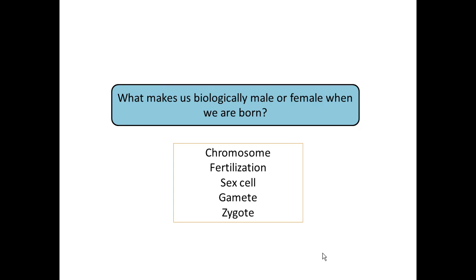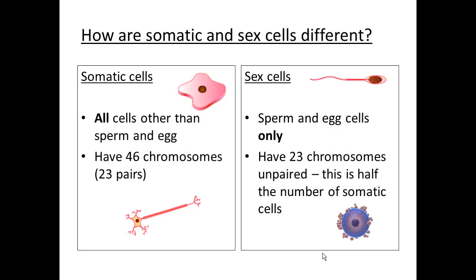Let's start this lesson with a quick recap of what we said last time. In our body we have two different kinds of cells: somatic cells and sex cells. Somatic cells have 46 chromosomes, or 23 pairs of chromosomes, inside the nucleus of every cell. Sex cells are the only kind of cells in your body that contain half the number of chromosomes — they contain 23 chromosomes in the nucleus.